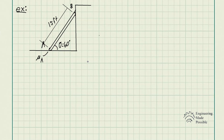In this problem statement, we have a ladder with a uniform weight of 80 pounds that rests against a smooth wall at point B. The coefficient of static friction at A is equal to 0.4, and we need to determine if the ladder will slip given the angle theta equal to 60 degrees.